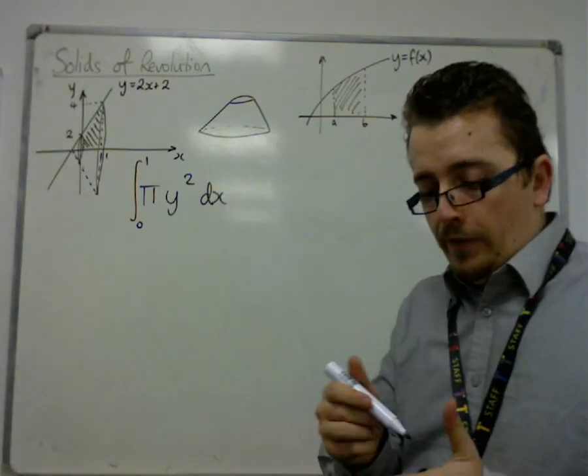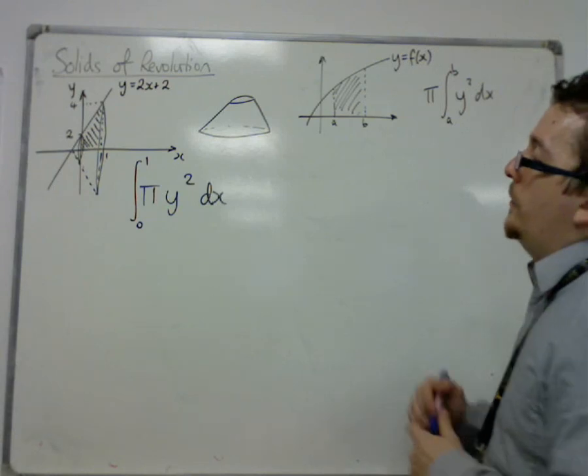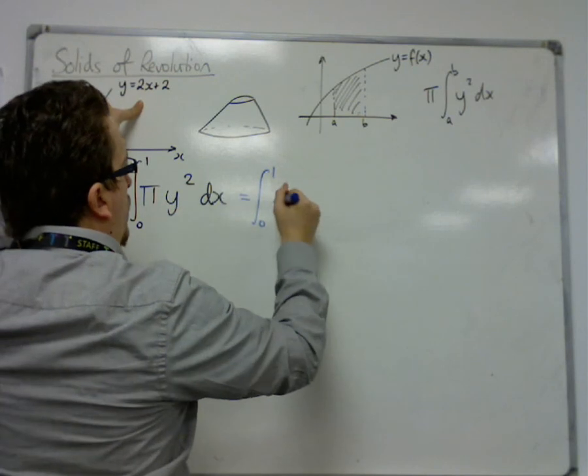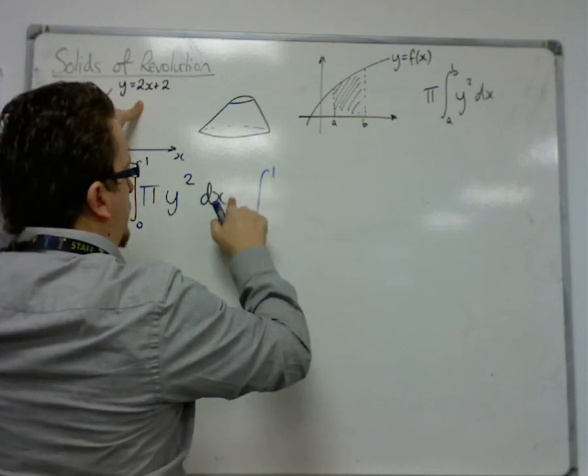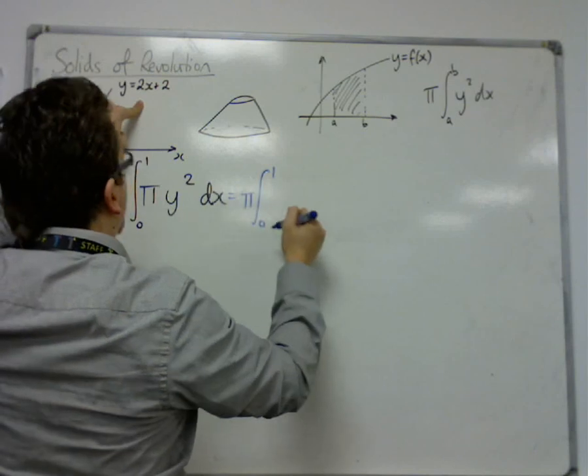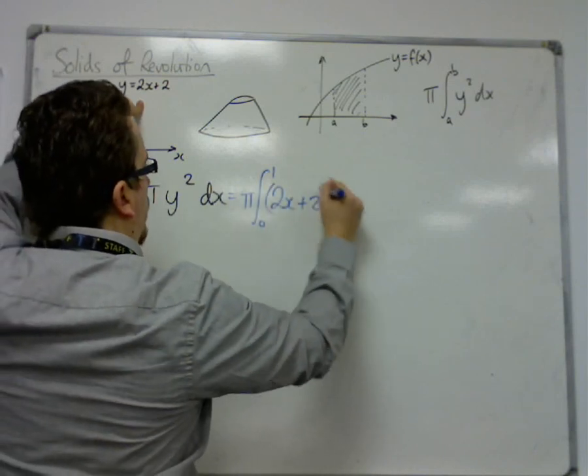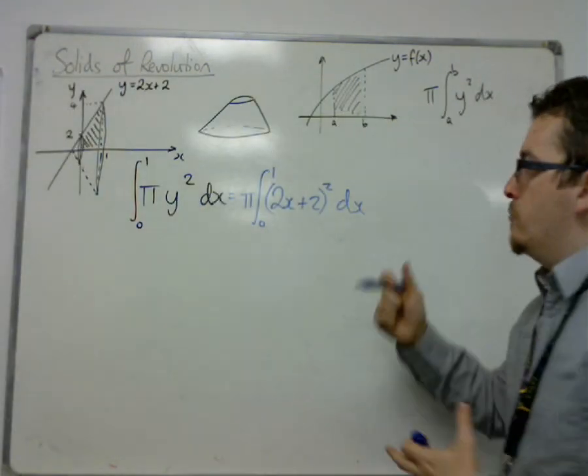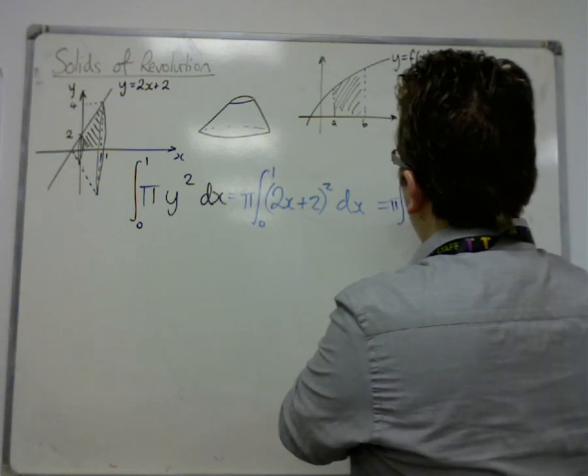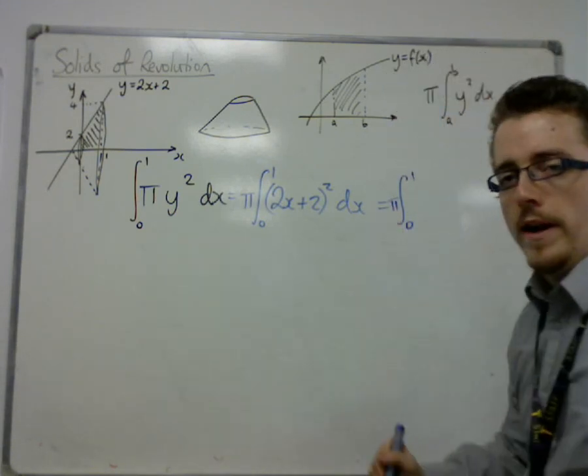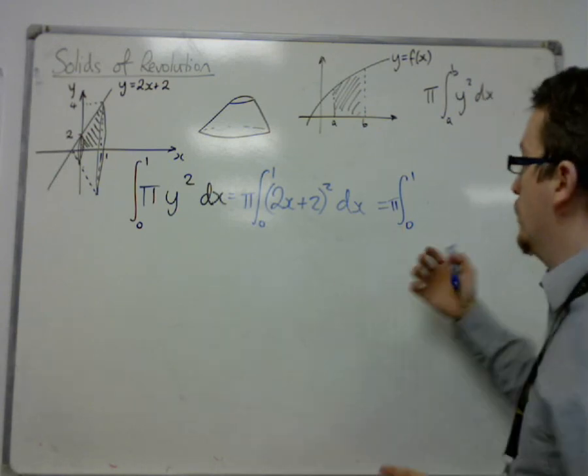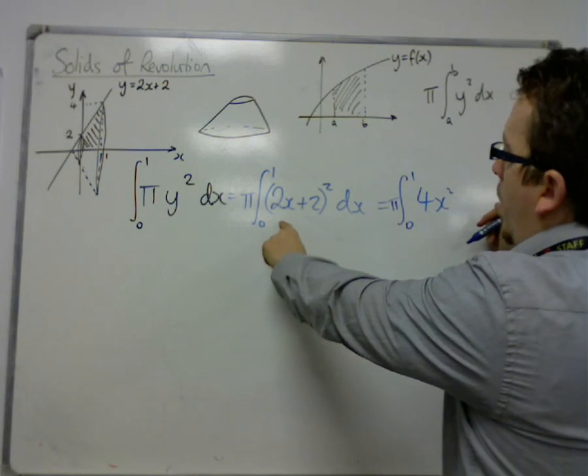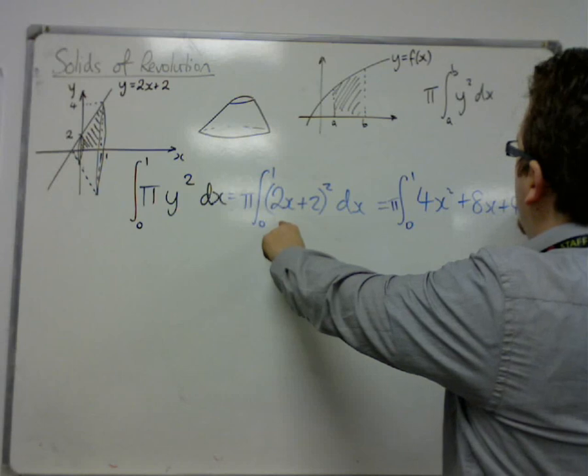Now in practice, what that means is that if I then substitute in my y equals here, I get the integral between 0 and 1, I'll bring the pi outside actually, and I've got 2x plus 2 all squared dx. So I multiply out the brackets, it's quite easy to forget the pi each time, so make sure you do. I almost forgot it there. So multiplying out the brackets, we get 4x squared plus 8x plus 4 dx.